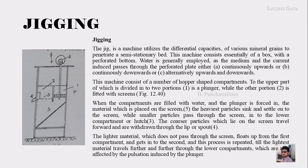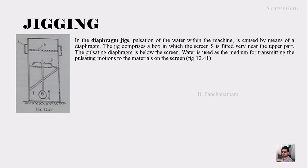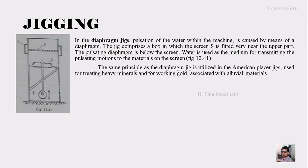The lighter material which does not pass through the screen floats up from the first compartment and gets into the second, and this process is repeated till the lightest material travels further through the lower compartment, also effected by the pulsation induced by the plungers. The second type is the diaphragm jig, where the pulsation of water within the machine is caused by means of diaphragms. This jig comprises a box in which the screen is fitted very near the upper part, and the pulsating diaphragm is below the screen. Water is used as the medium for transmitting the pulsation motion to the material on the screen.